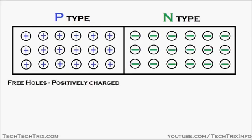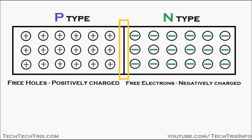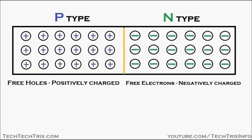You can see free holes which are positively charged are available in the P-type, and free electrons which are negatively charged are available in the N-type. This is the region where the P-type and the N-type join — the junction which is formed — called the PN junction.